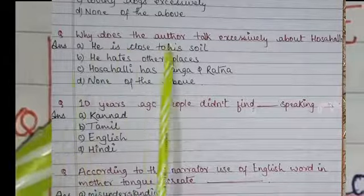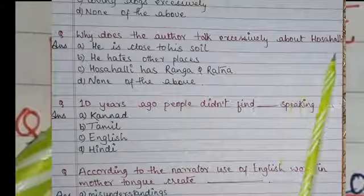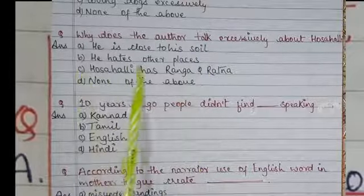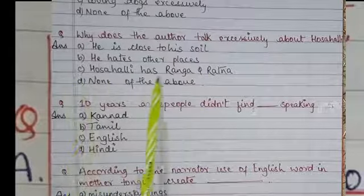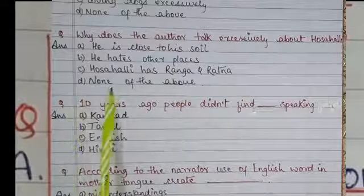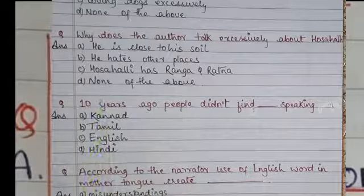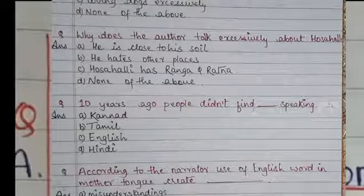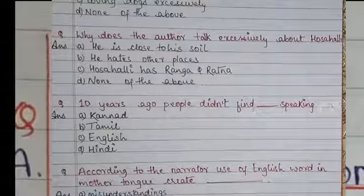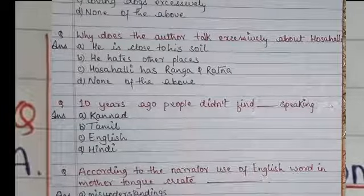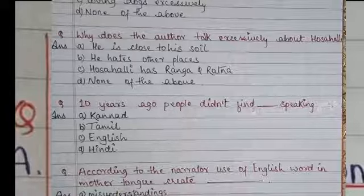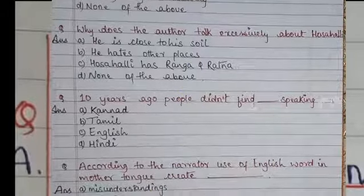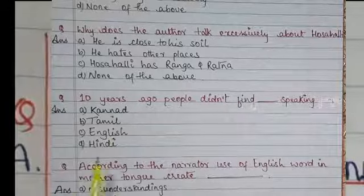Why does the author talk excessively about Hosahalli? Option A: He is close to his soil, Option B: He hates other places, Option C: Hosahalli has Ranga and Ratna, Option D: None of the above. The right answer is Option A — he is close to his soil. It's not that he hates other places or it's related to Ranga and Ratna; he simply loves his own place of birth.